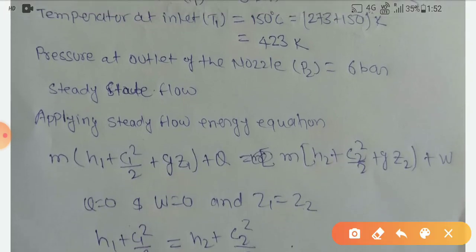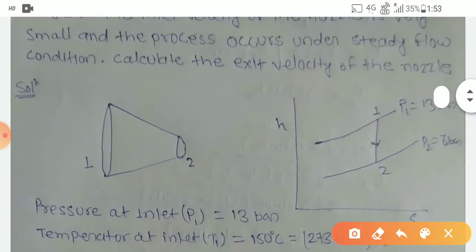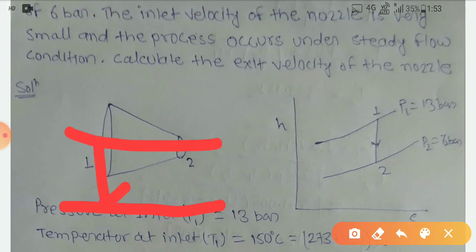You can write: m(H1 + C1²/2 + gz1) + Q = m(H2 + C2²/2 + gz2) + W. Here m is the mass flow rate, H1 is the enthalpy at inlet, C1 is the inlet velocity, and Z1 is measured from here to here.